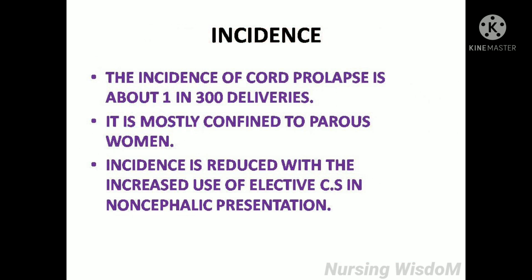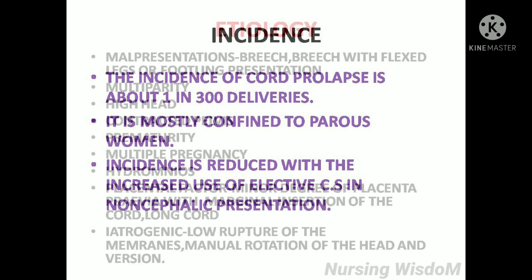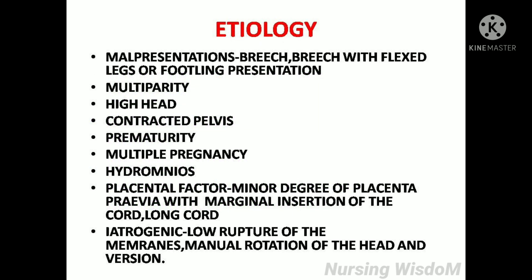The incidence of cord prolapse is about 1 in 300 deliveries. It is mostly confined to parous women. Incidence is reduced with the increased use of elective caesarean section in non-cephalic presentation.